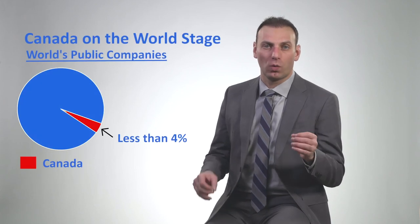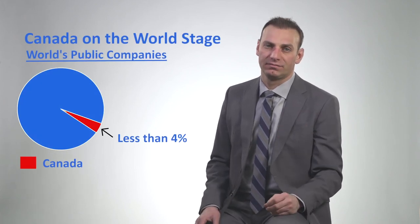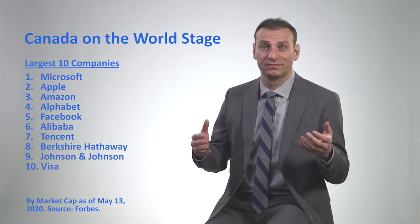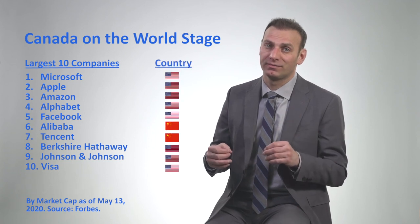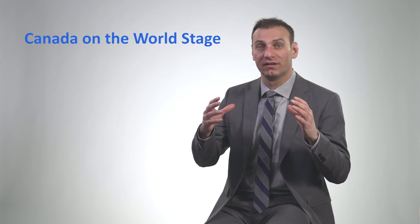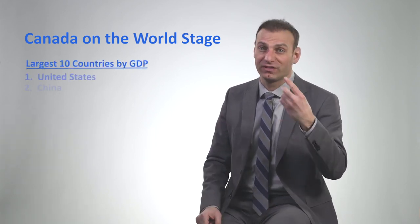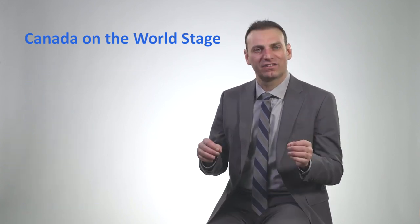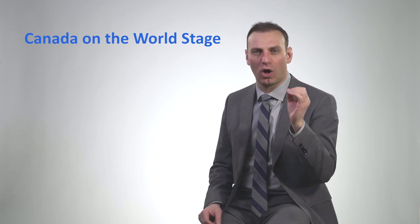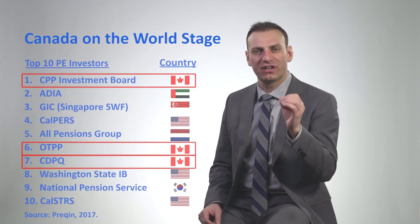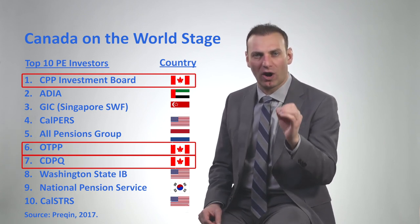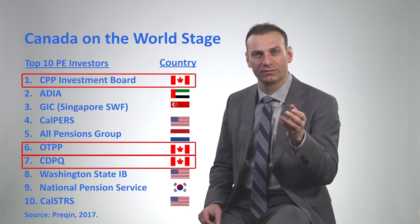Less than 4% of the world's public companies are based in Canada. When we look at the biggest 10 companies on the planet, none of them are based in Canada. And when we look at the size of the Canadian economy based on GDP, it's not first, second, or third — in fact, it's the 10th biggest economy in the world. So for a country that is this small on a world stage, why does it represent three of the 10 biggest investors in private equity in the world? Well, it's because of the unique Canadian pension model.